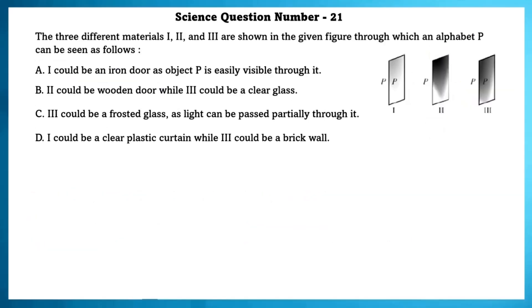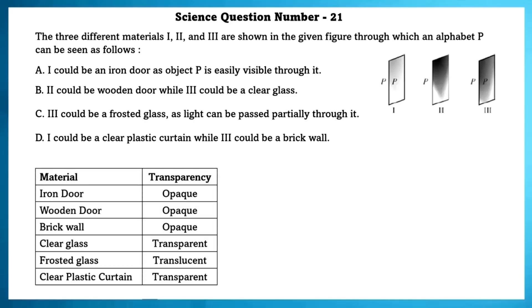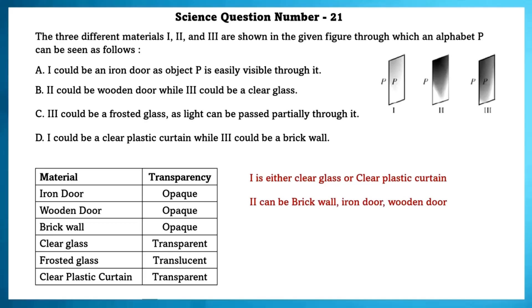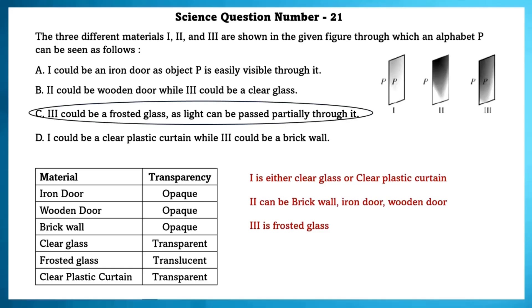Science question number 21. Three different types of material 1, 2 and 3 are shown through which an alphabet P can be seen. From the given information, material 1 is either glass or clear plastic since it is transparent. Material 2 can be a brick wall, iron door or wooden door since it is opaque. Material 3 is frosted glass as it is translucent. Using this, we can see that option C is correct.